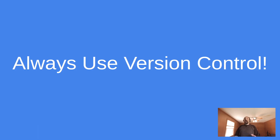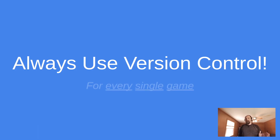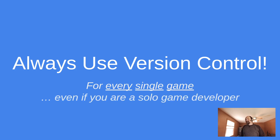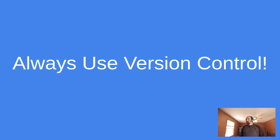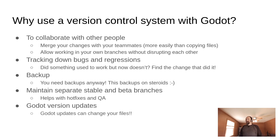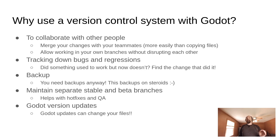I would really advocate that you always use version control for every single game — even if you're just playing around. I think you should always use version control, even if you're a solo game developer, because all of these things we talked about are useful to you even if you aren't collaborating with other people — like tracking down bugs, having a backup, having separate branches, Godot version updates. I just don't see why anyone wouldn't want that.